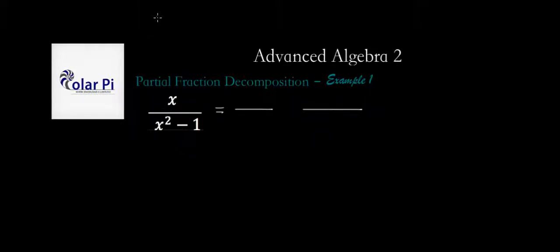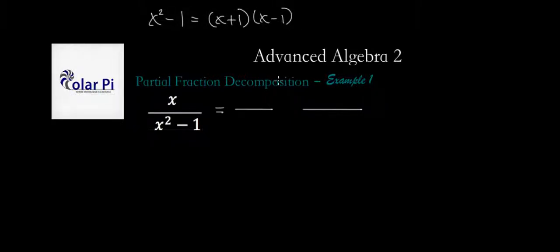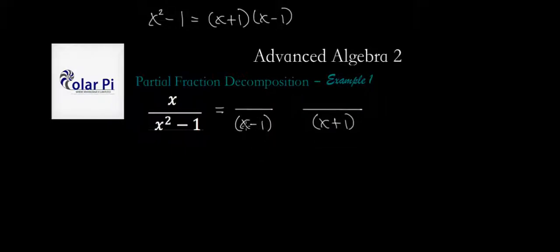Now we know by difference of squares — one of my favorite things — that x squared minus one factors as x plus one times x minus one. So we can write x minus one here; we could have written x plus one here instead, it doesn't matter. Now we have to write x plus one here. I wanted to get fancy by doing the less natural thing and writing x minus one here. For most of you it's probably tempting to write x plus one here first — you could have — but then you'd just have to write x minus one in the other spot.